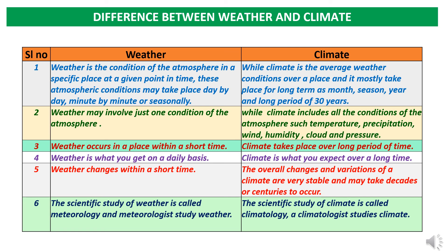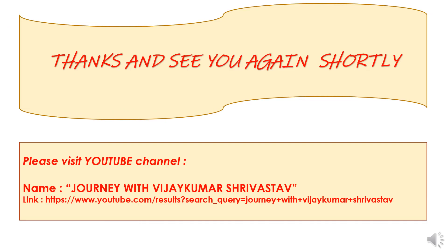In the case of weather, the scientific study of weather is called meteorology, and meteorologists study weather. In the case of climate, the scientific study is called climatology, and a climatologist studies climate. This presentation was all about Agriculture General Knowledge Part 3 — hope this will be useful to all of you. Thank you very much.